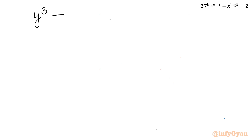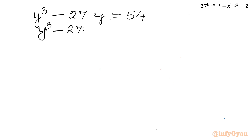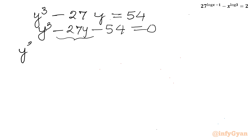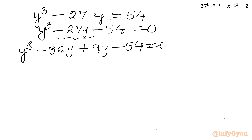Applying the substitution gives us y^3 minus 27y equals 54. Rearranging: y^3 minus 27y minus 54 equals 0. This is a cubic equation and I will use the method of factorization, splitting minus 27y as minus 36y plus 9y.